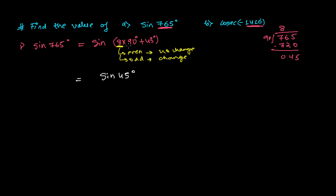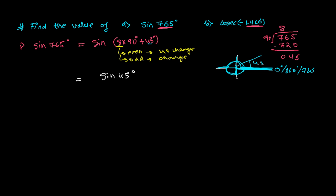Because 8 times 90, if you look at it in quadrant terms — counting through the first, second, third up to the eighth 90 degrees — after completing the eighth 90 degrees, we are back at the zero line, that is the 720-degree line. We then go a further 45 degrees, which puts us in the first quadrant. In the first quadrant, the sign is always positive. So it is simply sine 45 degrees, which equals 1 over root 2. That is our answer.